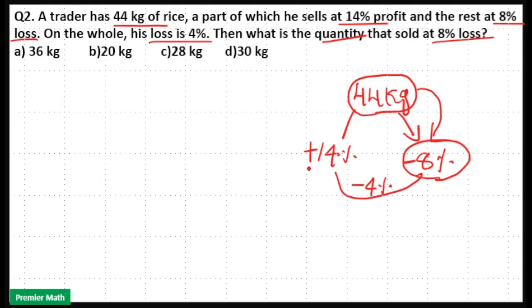In allegation, use the initial numbers that is plus 14 and minus 8. Then the result of these two processes is minus 4, that is minus 4 percentage loss. 4 percentage loss means minus 4.